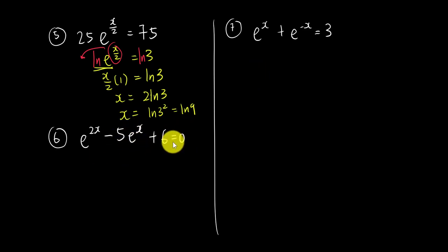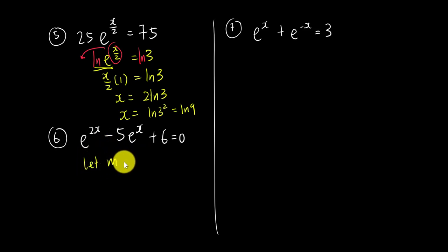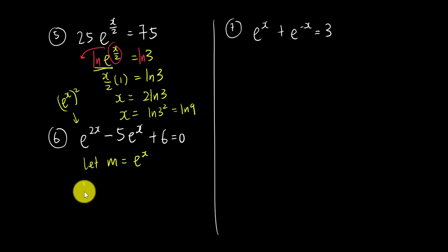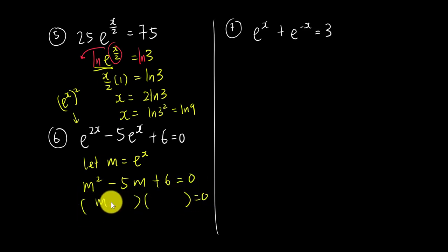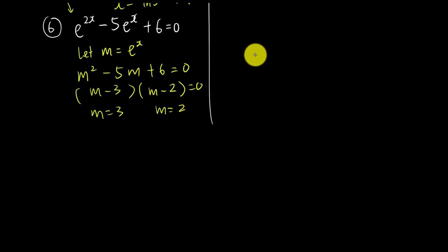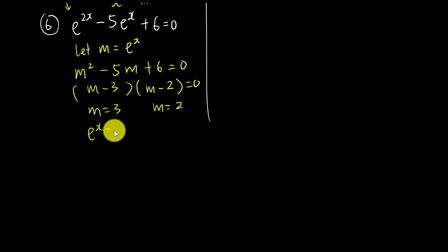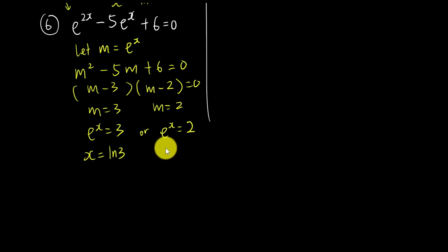Question six is a common higher-level question involving a quadratic in e^x. Let m = e^x; then e^(2x) = m². The equation becomes m² − 5m + 6 = 0, which factorizes as (m − 3)(m − 2) = 0, giving m = 3 or m = 2. Substituting back: e^x = 3 → x = ln(3), and e^x = 2 → x = ln(2). So we get two answers: ln(3) and ln(2).